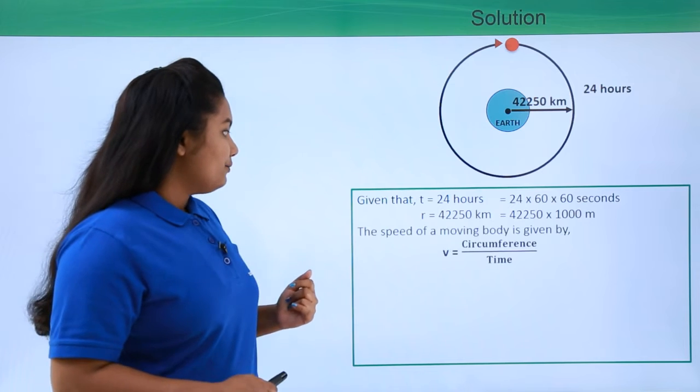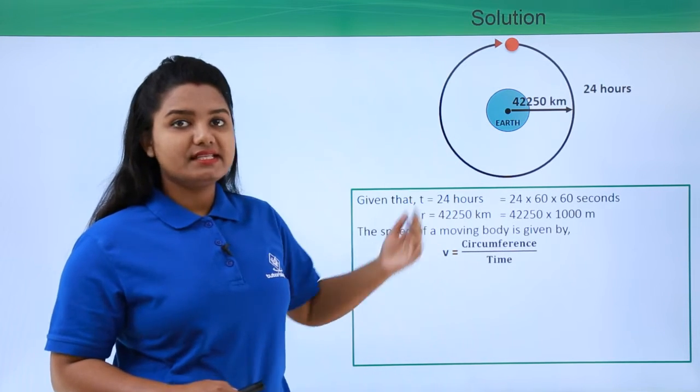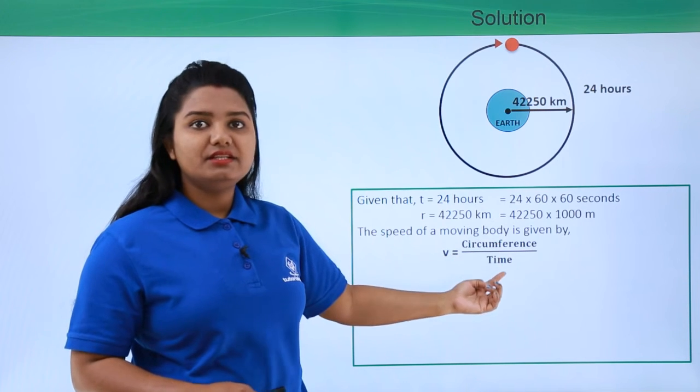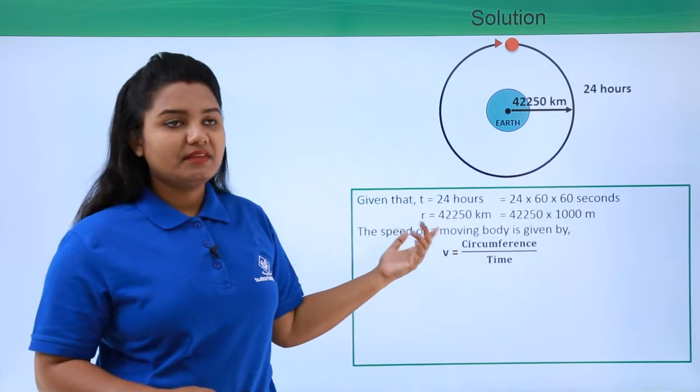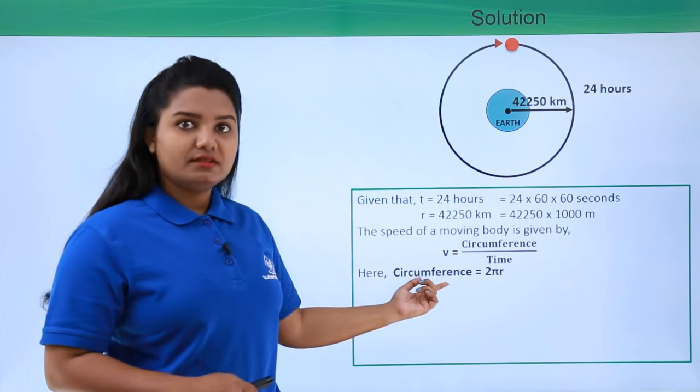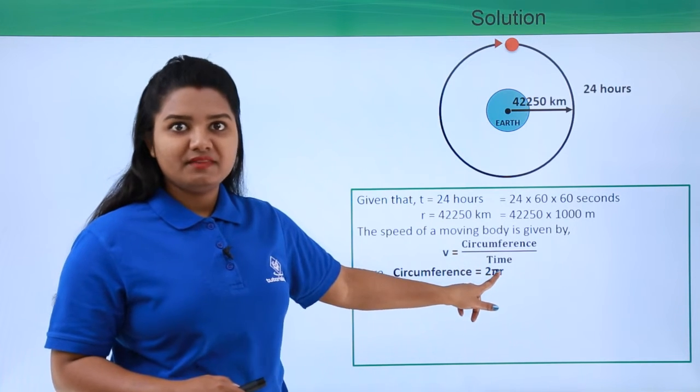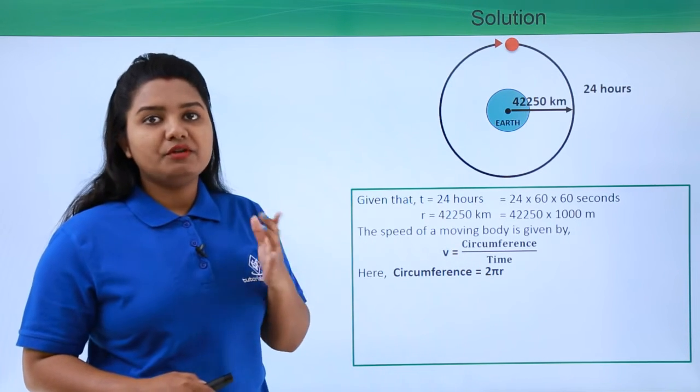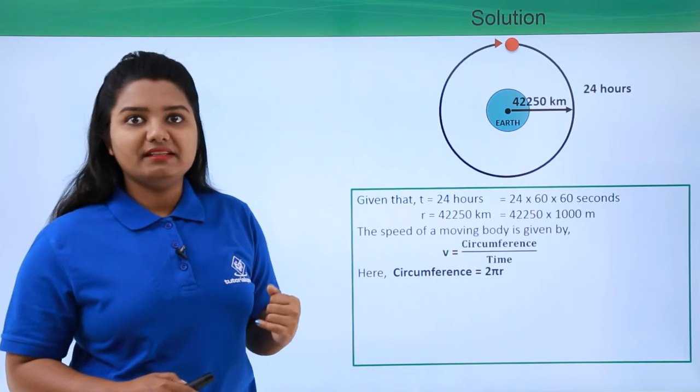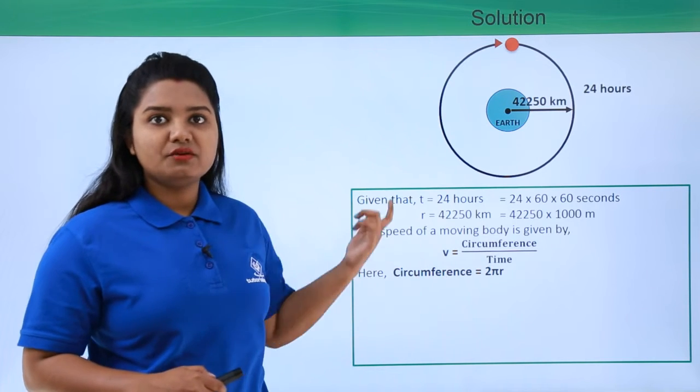We know that the speed of a moving body in a circular path is given by V equals circumference of the circular path divided by the time taken. The circumference of a circular path is given by the formula 2πr, where the value of π is 3.14 and r is the radius of the circular path.